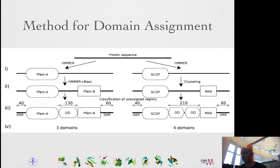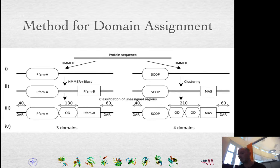If you use a length cutoff of 100, in the left case with P5M we will have three domains, but in the right case with SCOP it would have four domains, where we have more than 200 unassigned residues in between.